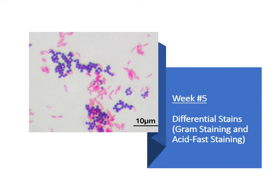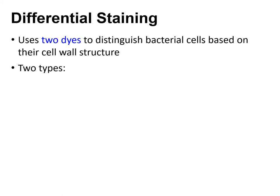Hello everyone, this week we're going to talk about differential stains. We've already covered simple stain, so right now we're going to go over two types of differential stains: gram stain and acid fast stain. With differential staining, we usually use two dyes instead of one single dye like with the simple stain, and differential staining is going to help us distinguish some differences between the bacterial cells that we are looking at.